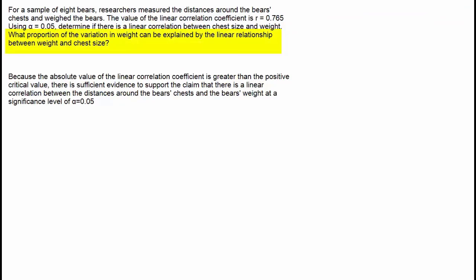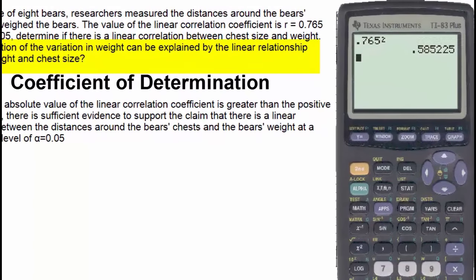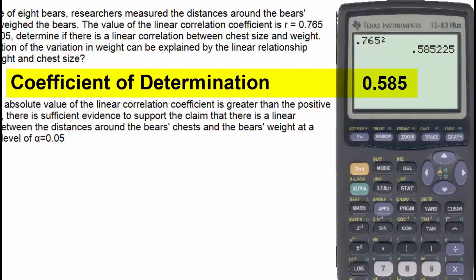In answering the question — what proportion of the variation in weight can be explained by the linear relationship between weight and chest size — we need to consider the value of the coefficient of determination, which is r-squared. To compute r-squared, we take 0.765 and square it, and we see that the proportion of the variation that can be explained by the linear relationship is 0.585, which is the value of the coefficient of determination.